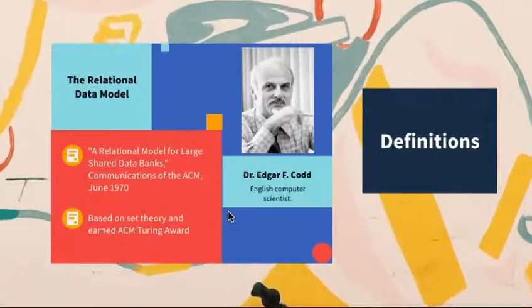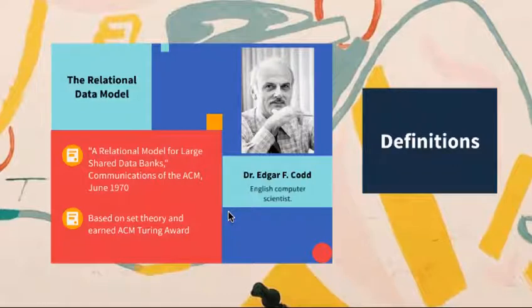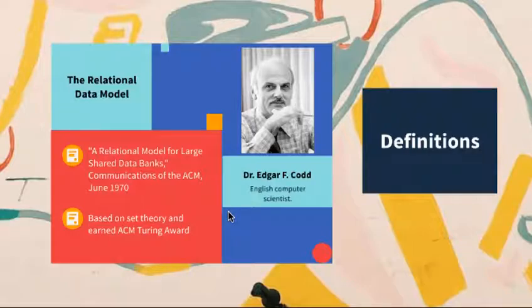This relational data model was first introduced by Dr. Edgar Codd. It was presented in the ACM Communication of ACM in 1970, and you can find the paper which has the topic 'A Relational Model for Large Shared Data Bank.' This theory is based on set theory, and for this work Dr. Edgar won the ACM Turing Award as well.